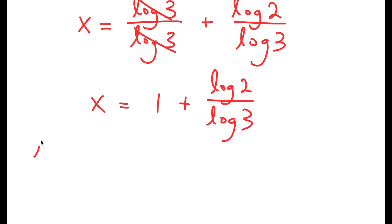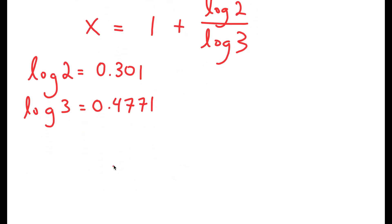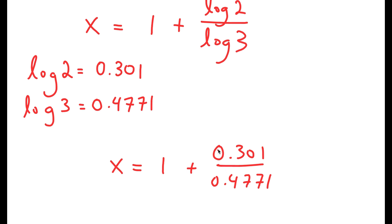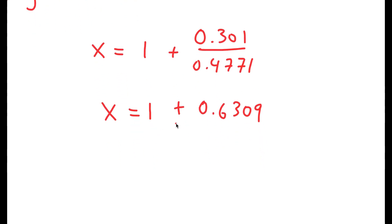Now, log of 2 is equal to 0.301 and log of 3 is equal to 0.4771. So I get x is equal to 1 plus 0.301 over 0.4771. And 0.301 over 0.4771 is 0.6309. So I have x is equal to 1 plus 0.6309, which is equal to 1.6309. This is my solution.